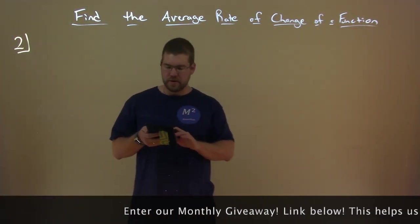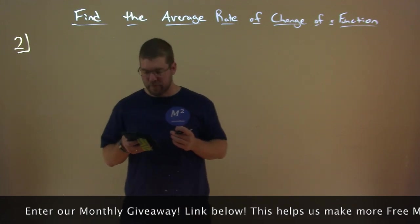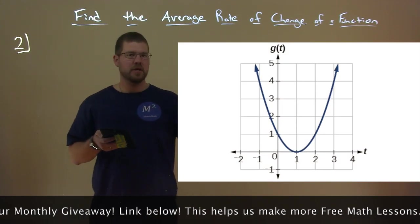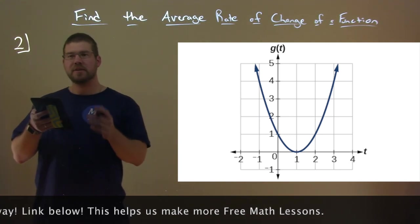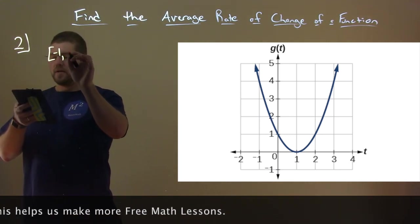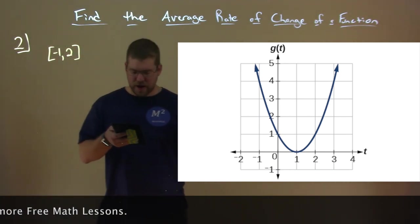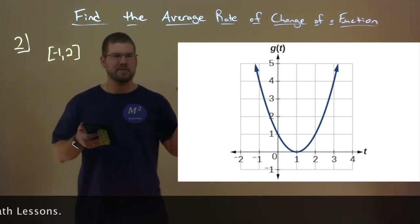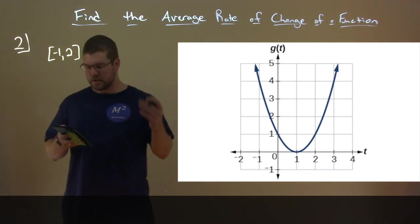Number two — we're computing average rate of change from a graph. We're given our function g(t) and we're going to find the average rate of change on the interval from negative 1 to 2. We have our graph g(t) and we want to find the average rate of change over that interval.